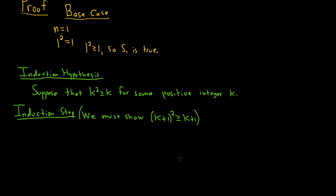Notice that I wrote 'we must show.' It's really important, especially if you're turning this in for a homework assignment, that you write that down. Because if you just write this down without that note, whoever's reading your work will think you didn't actually prove it. By letting the reader know you're trying to show that, you're also letting them know you haven't proven it yet — you're just stating what you're trying to show.